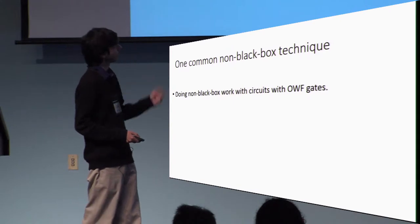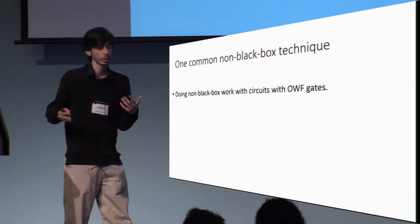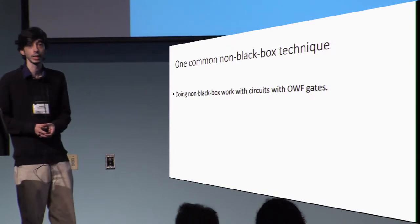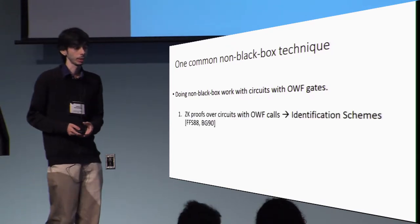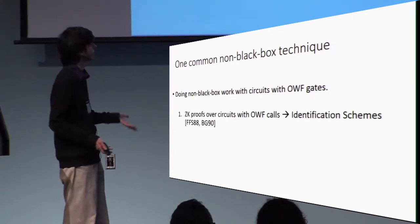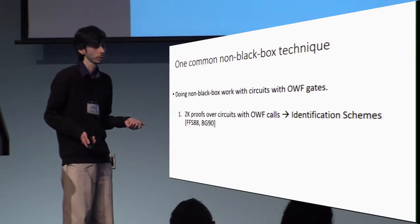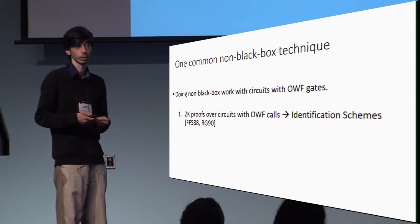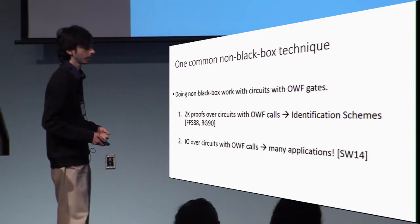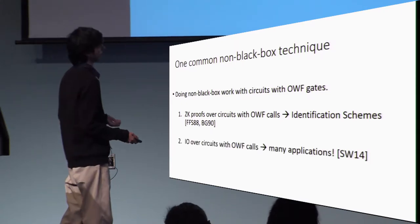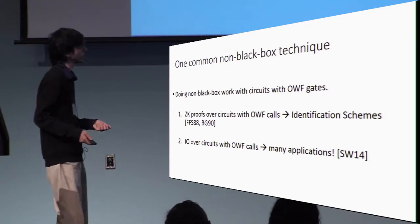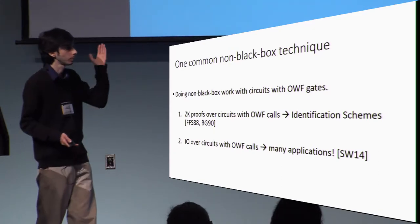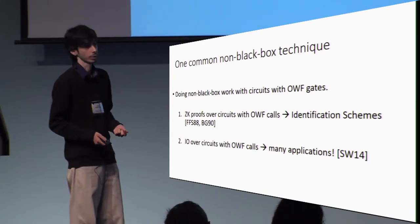One common non-blackbox technique involves doing computation over circuits with one-way function gates inside them. This behavior is observed, for example, in the case where we could have zero-knowledge proofs over circuits with one-way function calls in order to realize identification schemes. Another example relevant to this session is I.O. over circuits with one-way function calls, which could result in many applications, some of which are represented in the Sahai and Waters paper.